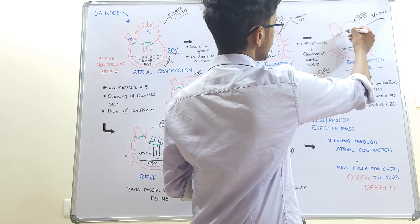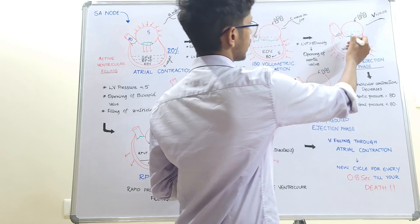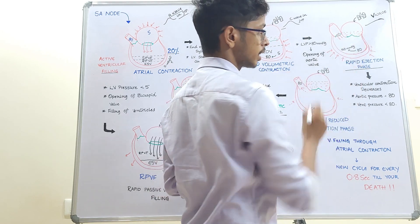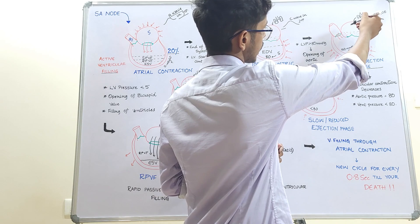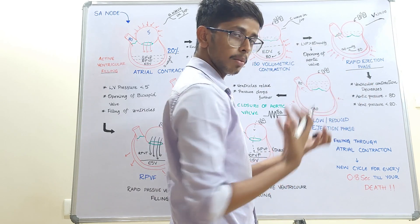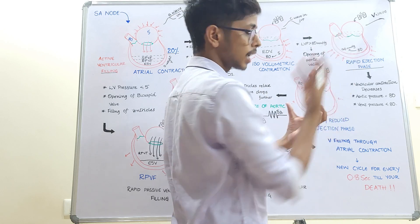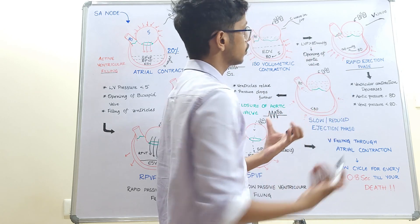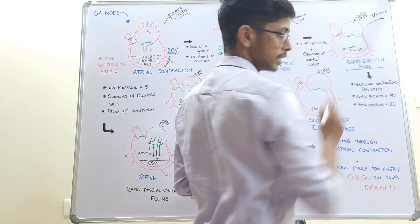Meanwhile, in the atria, the bicuspid valve is closed, so the atria act as a reservoir, collecting all the blood coming from the lungs. This collection of blood creates the V-wave in the JVP. Everyone should know the reason for the A-wave, C-wave, and V-wave in the JVP.